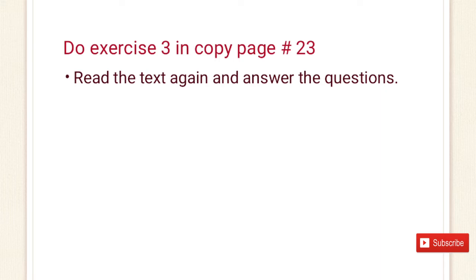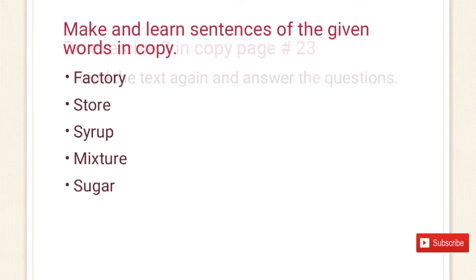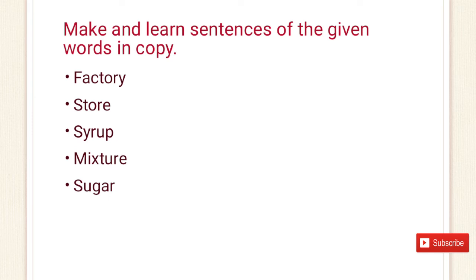Let's move towards the next exercise. The question is: make and learn sentences of the given words in your copy. The words are: number 1, factory; number 2, store; number 3, syrup; number 4, mixture; and number 5, sugar.